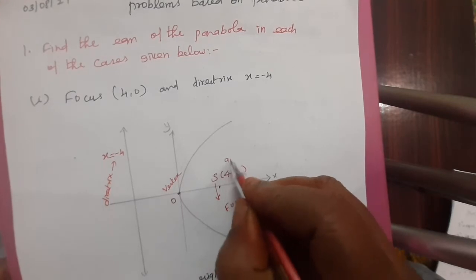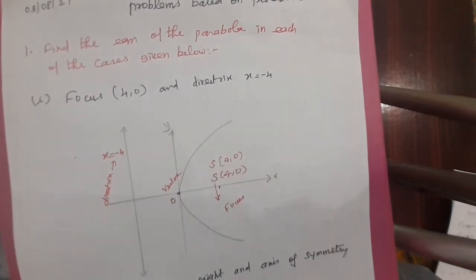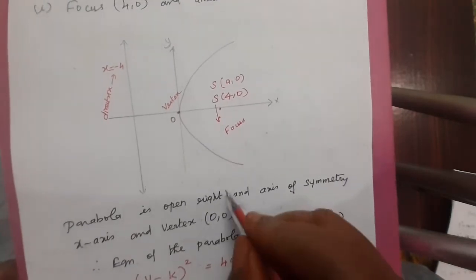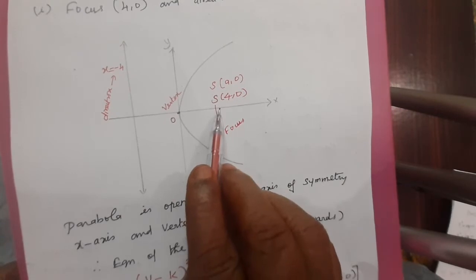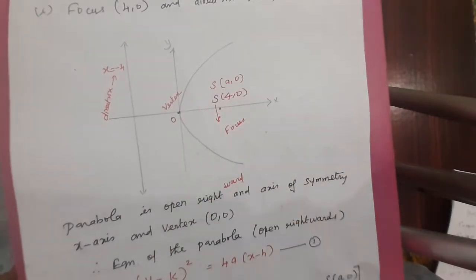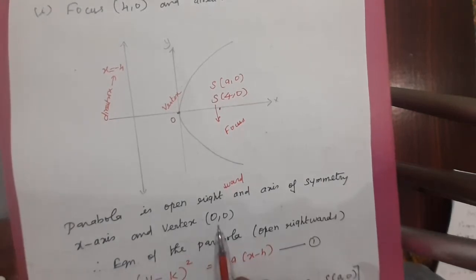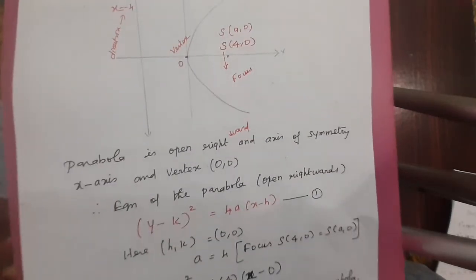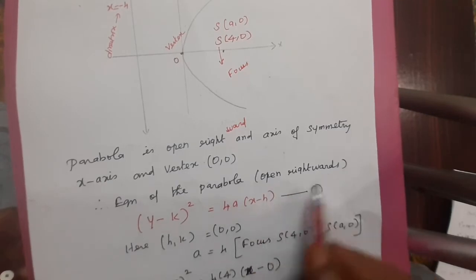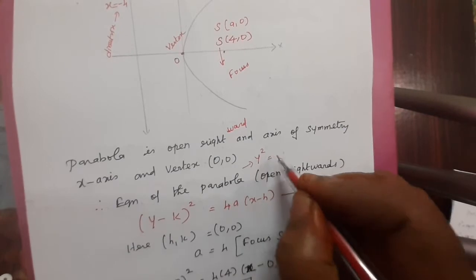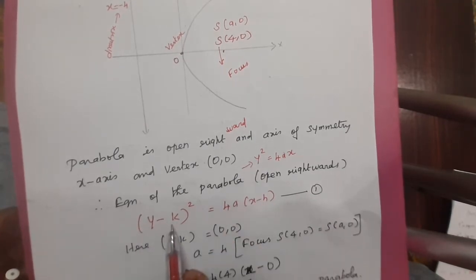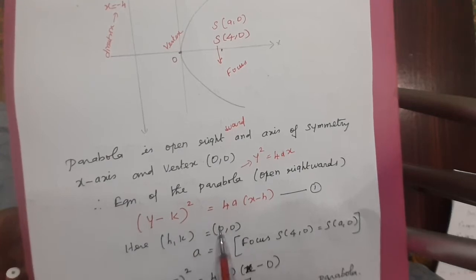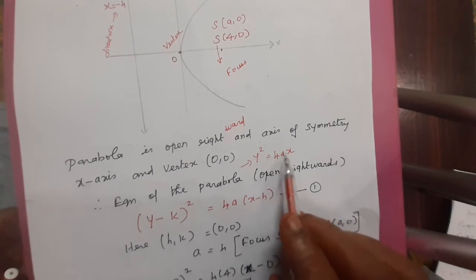The focus is at a comma 0, and opposite to the focus is the directrix. This parabola is open rightward. The axis of symmetry is the x-axis because the focus lies on the x-axis. The vertex is the origin. The equation of the parabola open rightward passing through the origin is y squared equals 4ax. The general standard form is y squared equals 4ax, or y minus k whole squared equals 4a times x minus h.